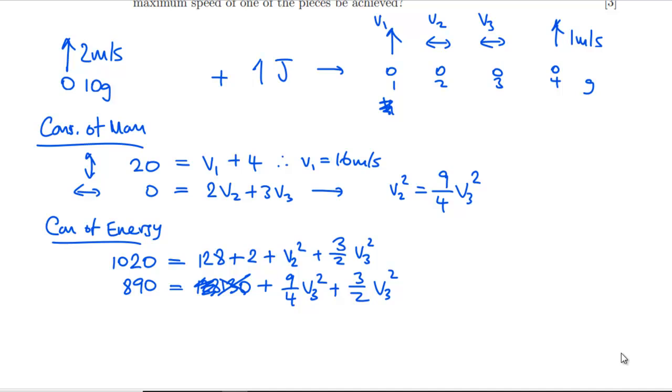So that's going to be 130 plus 9/4·v₃² plus 3/2·v₃². Let's take this 130 off of both sides. So that's going to be 110 off of that, so 890. Then we're going to want to multiply everything by 4.